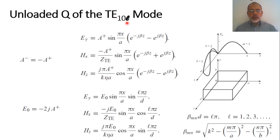This video covers the unloaded quality factor of the TE10L mode for a rectangular cavity. We have seen in the previous video how to calculate the resonant frequency of a rectangular cavity. The rectangular cavity can be considered as a rectangular waveguide section terminated by a short circuit from its two ends.